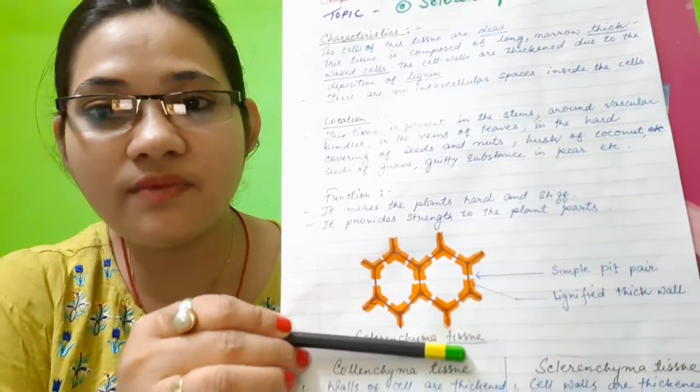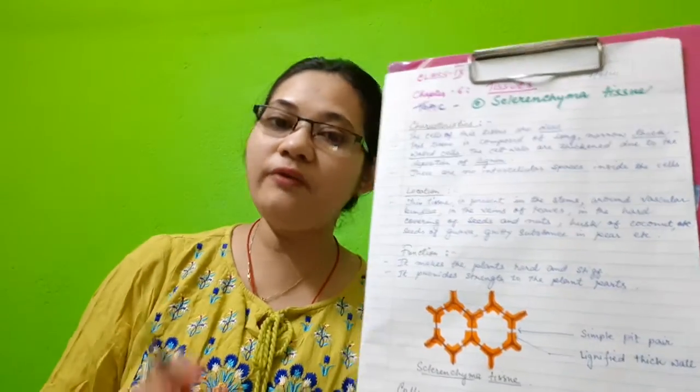Sclerenchyma tissue is made up of dead cells. They usually do not have a nucleus or protoplasm. At a certain point, the nucleus and protoplasm become dead, and the walls of sclerenchyma become lignified — they become very thick. They are known as lignified cells, but PITs are still present.